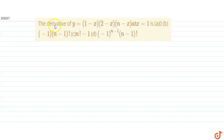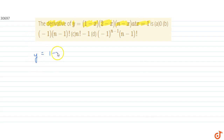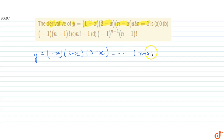In this question we have to find the derivative of y, where y is given as (1 minus x) into (2 minus x) into (3 minus x), up till the last term (n minus x). So y equals (1 minus x)(2 minus x)(3 minus x) till the last term (n minus x), and we need to find dy by dx.